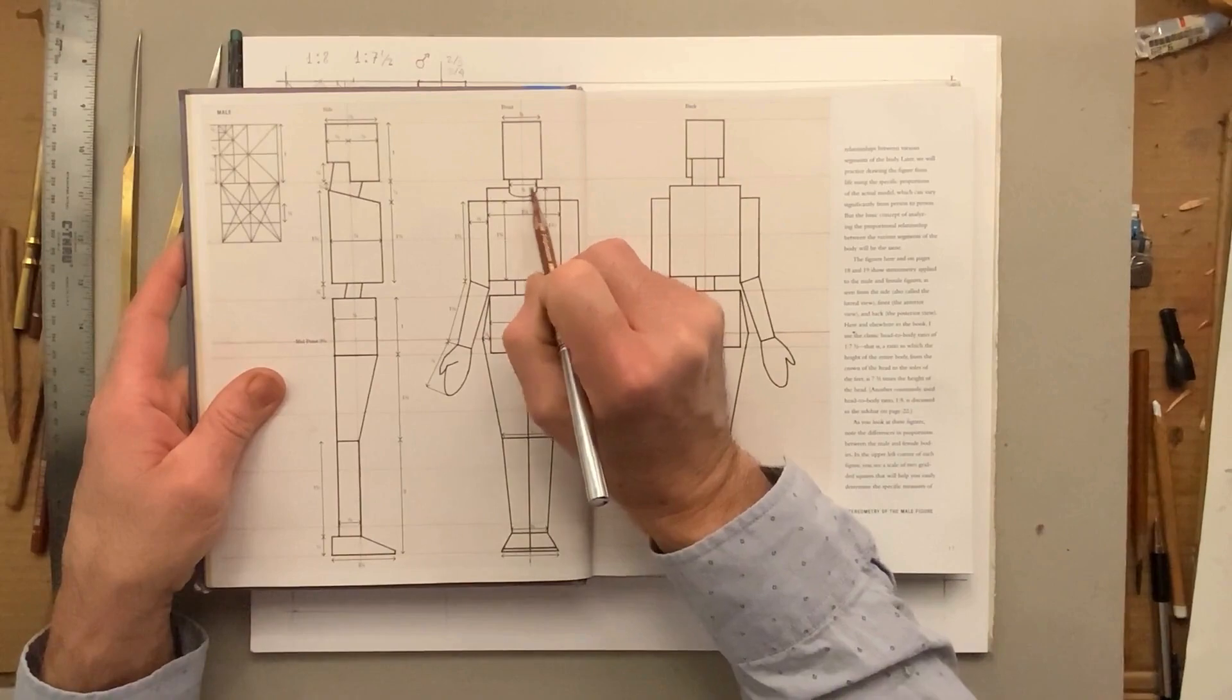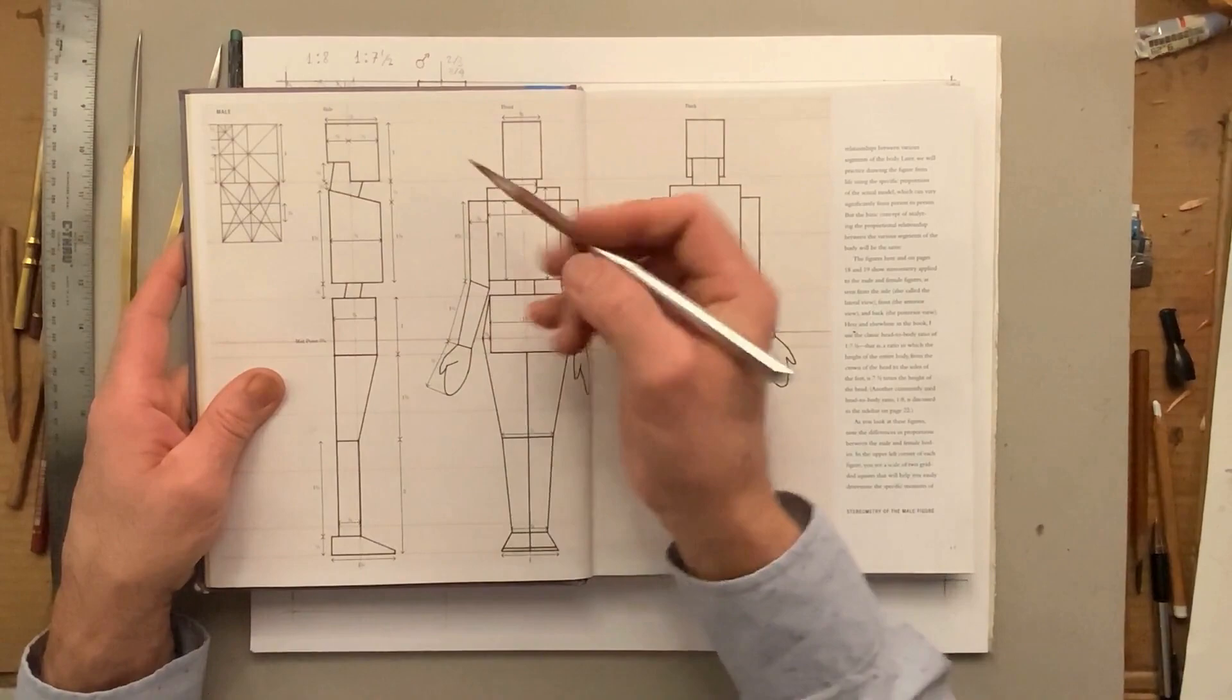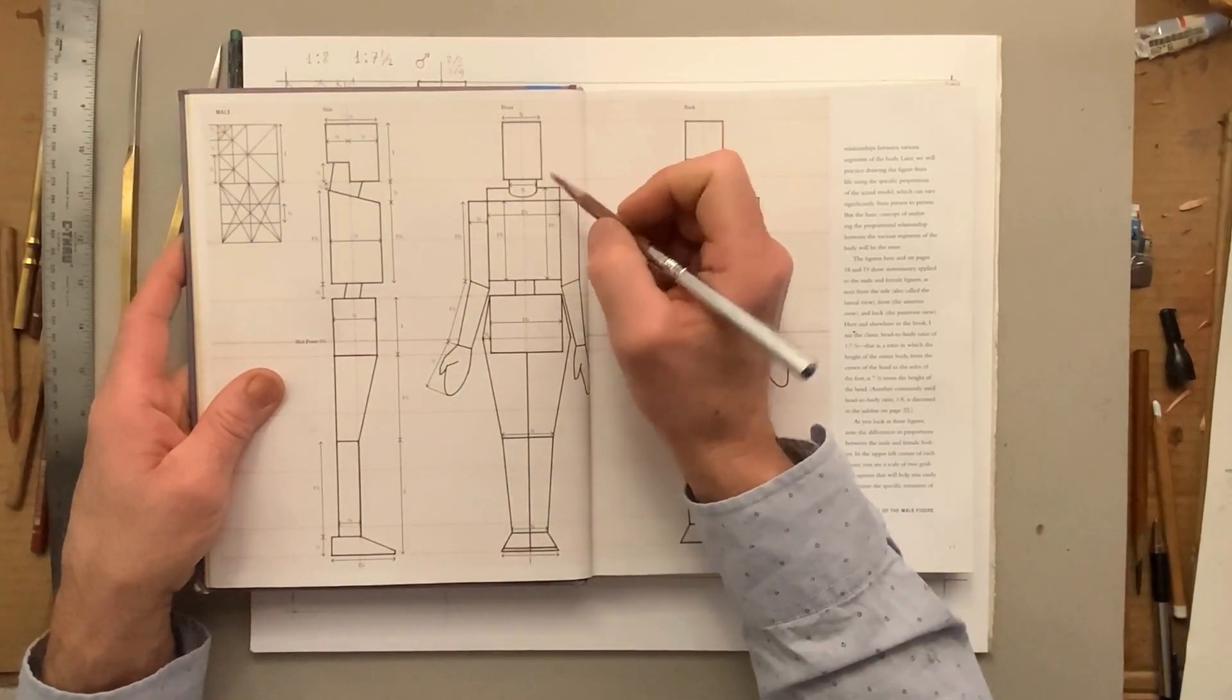This is the back of the rib cage here - the back of the rib cage is higher than the front of the rib cage. So I'm going to have a slanted plane.